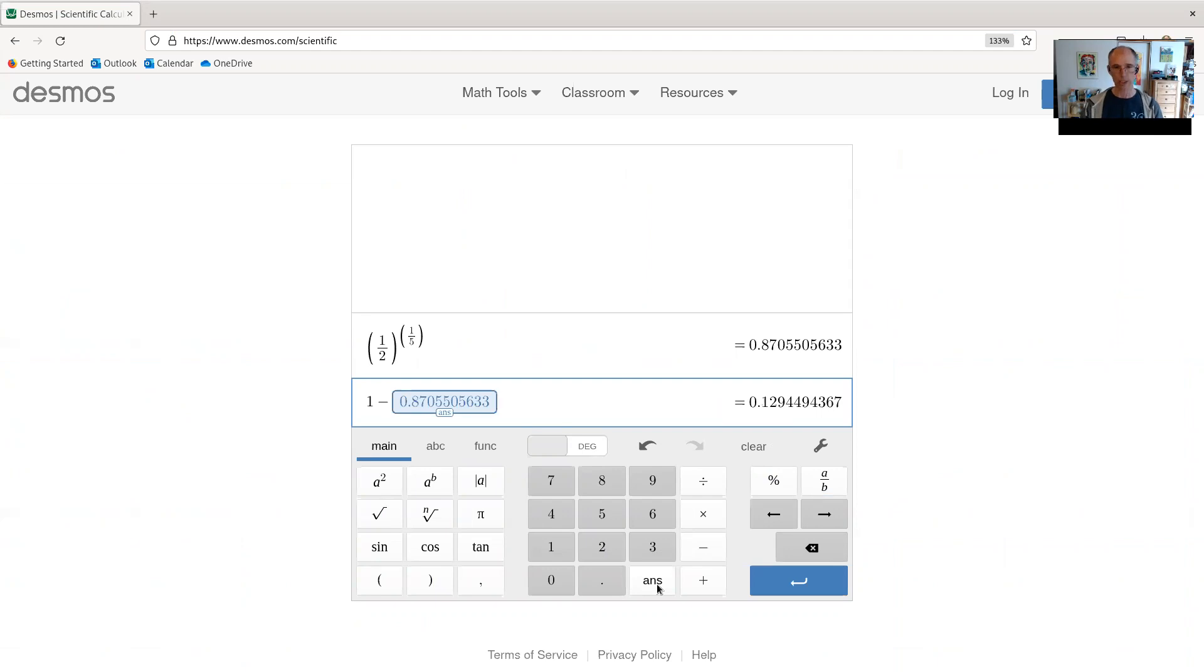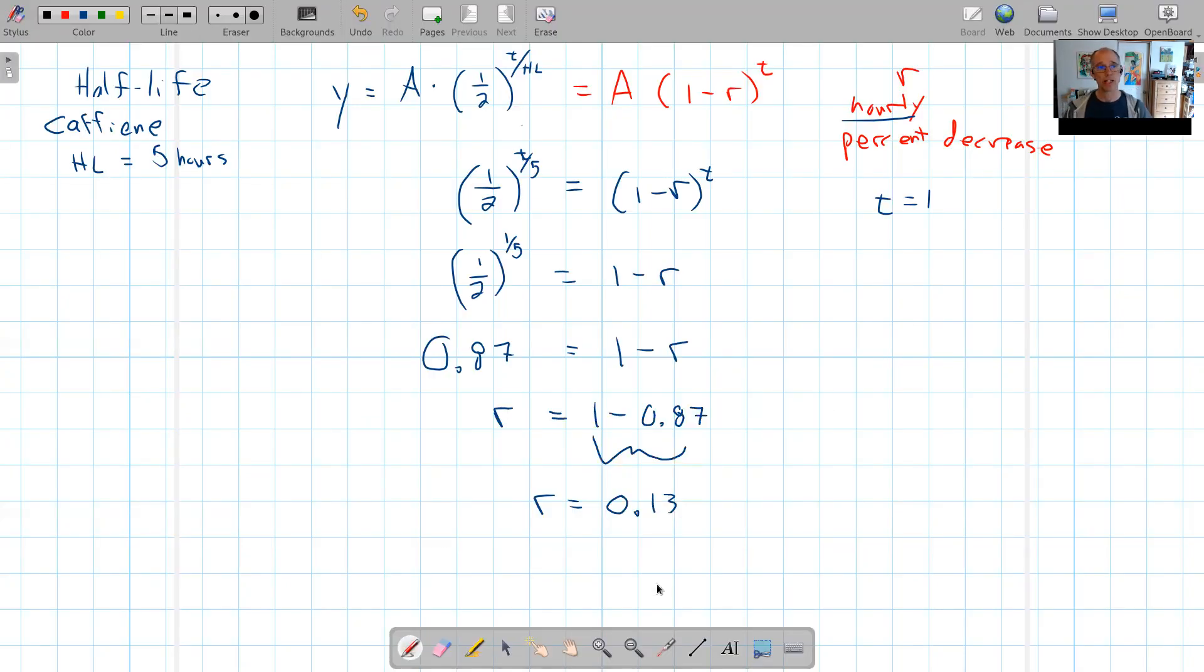So here we can see that if the half-life is five hours for some substance, then the hourly rate of decrease is about 13%.